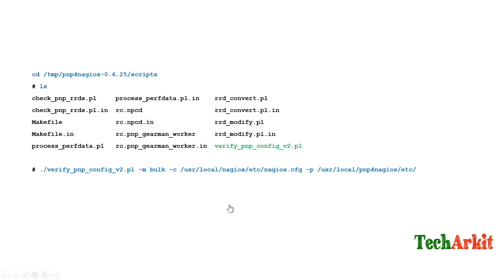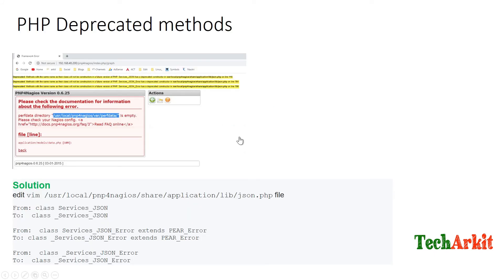When opening PNP for Nagios in the browser, you may get deprecated PHP errors. To fix this, edit the file /usr/local/pnp4nagios/share/application/lib/json.php. At line 115, add an underscore to the class name; do the same at line 789; and at line 795 there is a service template class — add an underscore there as well. This will eliminate the PHP deprecation error messages.